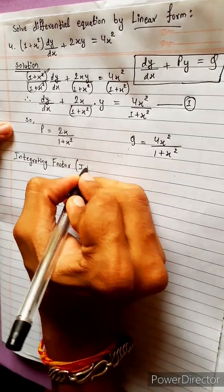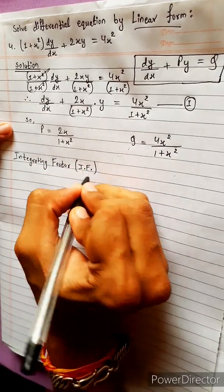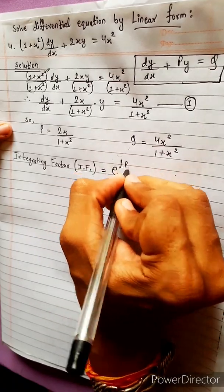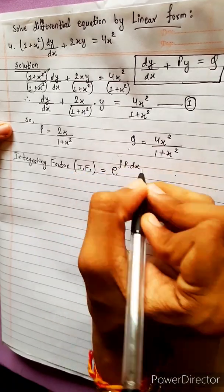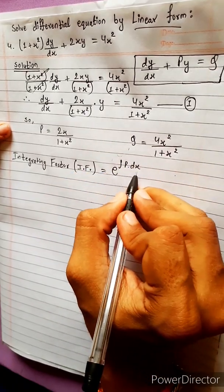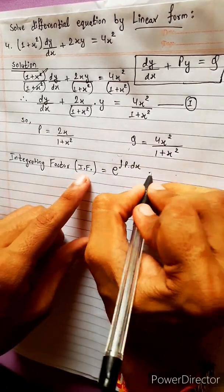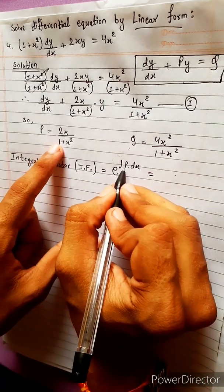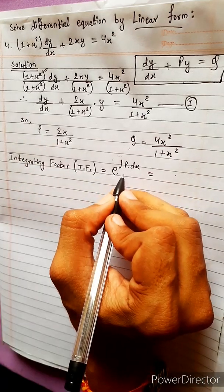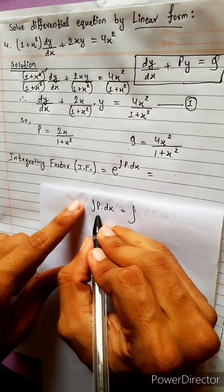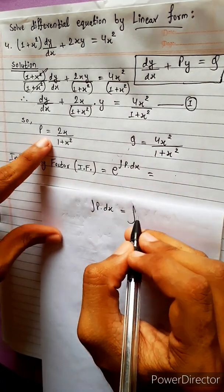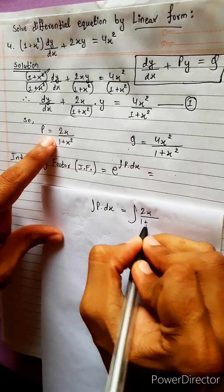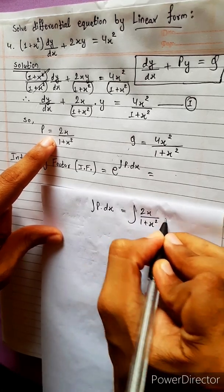The integrating factor is e to the power of the integral of P dx. Now, the integration of P dx equals the integration of 2x divided by (1 plus x squared) dx.